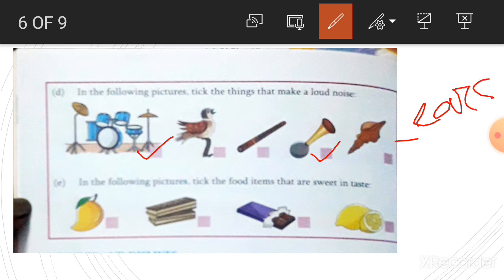In the following pictures, tick the food items that are sweet in taste. Mango is sweet. This one is also sweet. This one is also sweet. This is not sweet. To taste anything, we use our tongue.